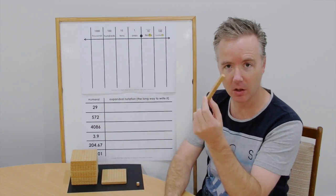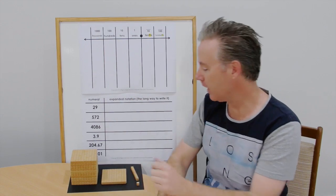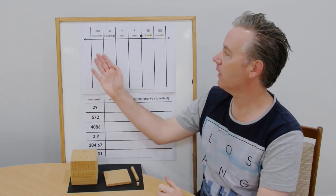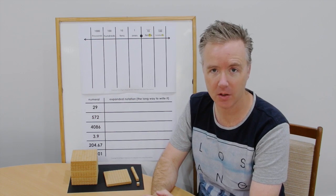The next column we have our tens column, ten of those ones. Hundreds is next, ten of the tens. And the last one shown here is our thousands column, ten of the hundreds.